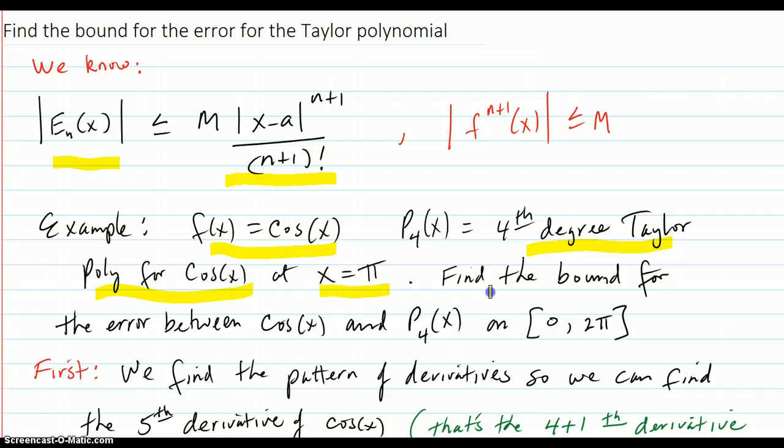The question is find the bound for the error between cosine x and P4 of x on this particular interval.